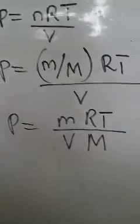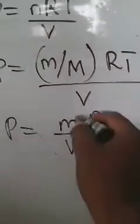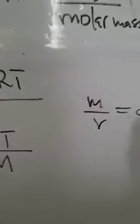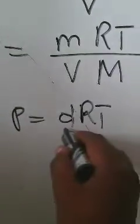We can see clearly that we have mass over volume in that expression, and mass over volume equals density D. Substituting, we get P = DRT/M. Making M the subject of the formula gives us M = DRT/P. This is the equation we can use to calculate the molar mass of a gas.